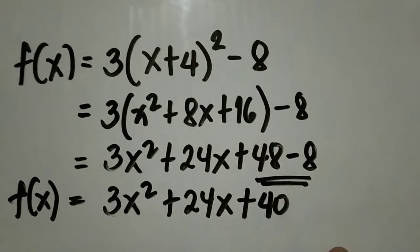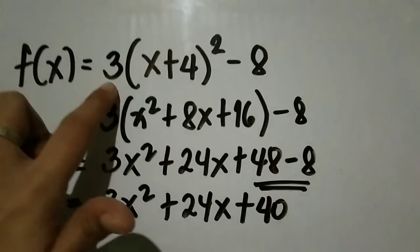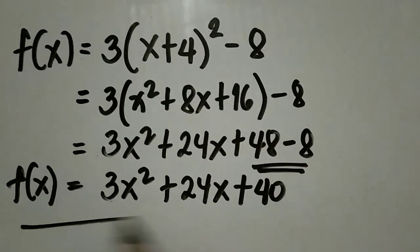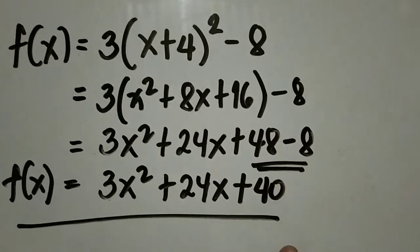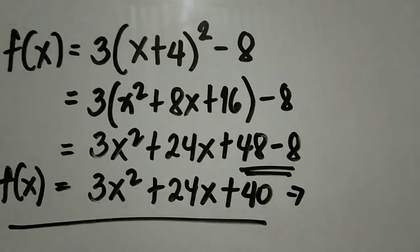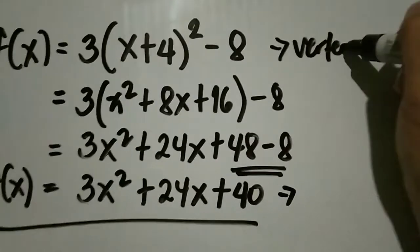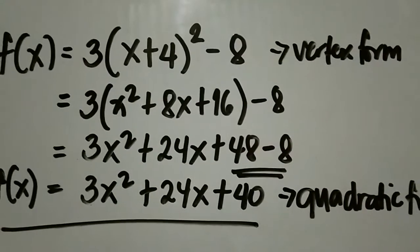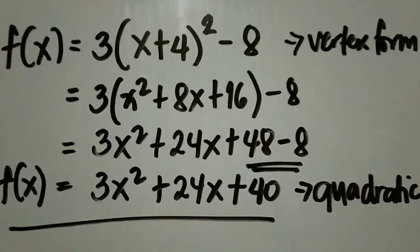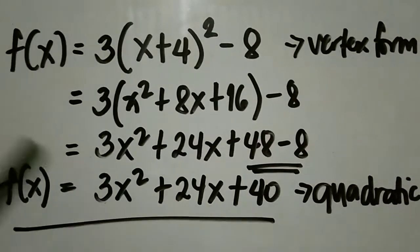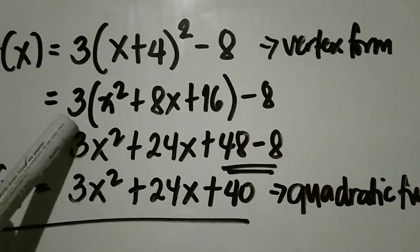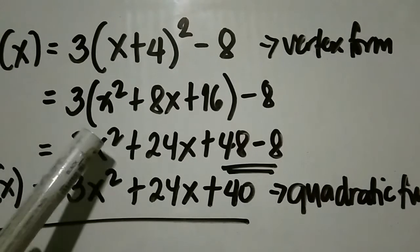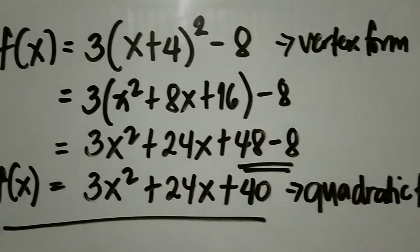So from vertex form f(x) = 3(x + 4)² - 8, naging f(x) = 3x² + 24x + 40. So tandaan: para ma-change natin ang vertex form into quadratic function, i-square natin yung ating binomial, then i-multiply kung meron tayong numbers sa labas ng parentheses, and then combine similar terms. Ayan po yung ating sagot.